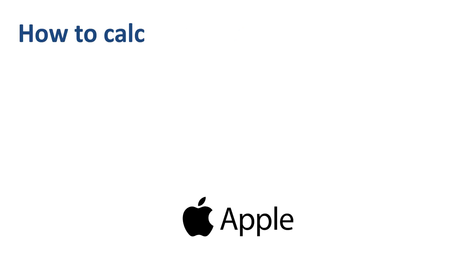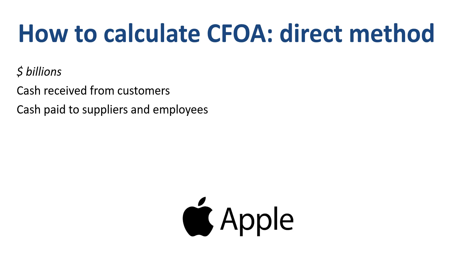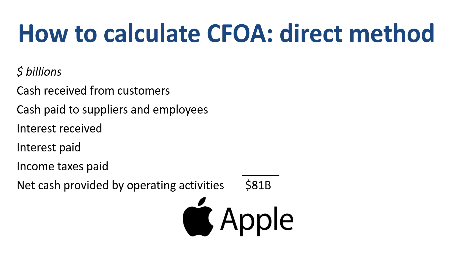One way to show detail within the cash from operating activities section is to use the direct method. In the direct method, cash received from customers, cash paid to suppliers and employees, interest received, interest paid, and income taxes paid are separately listed line items that are directly tracked. Sadly, very few companies report cash from operating activities this way.